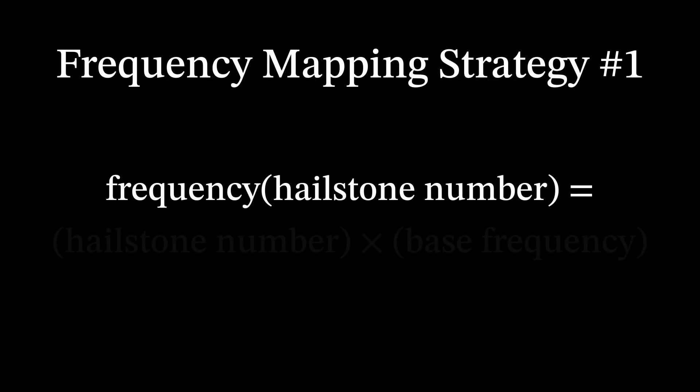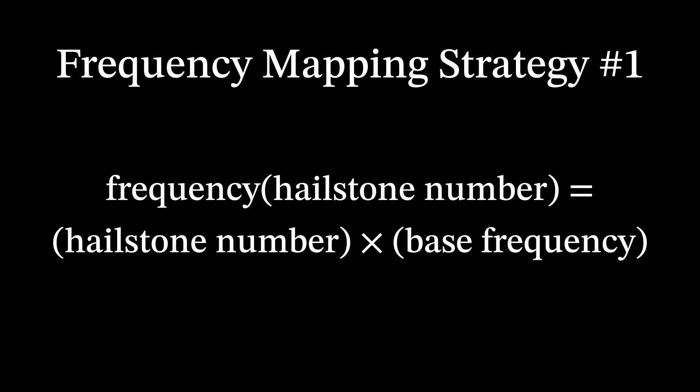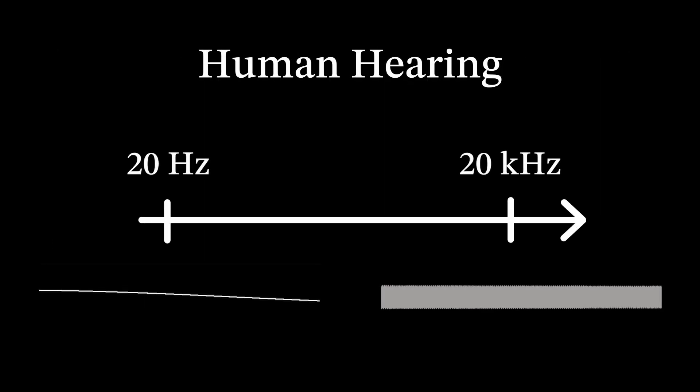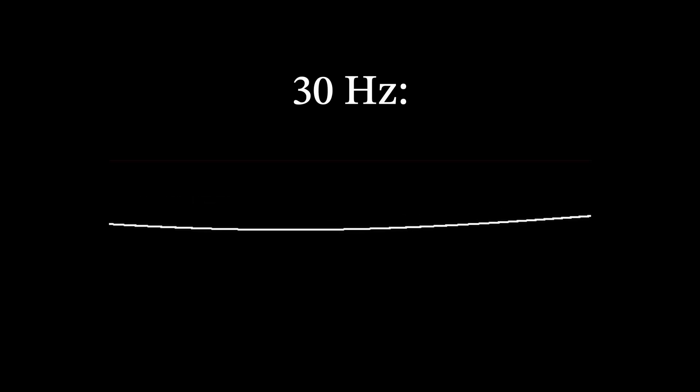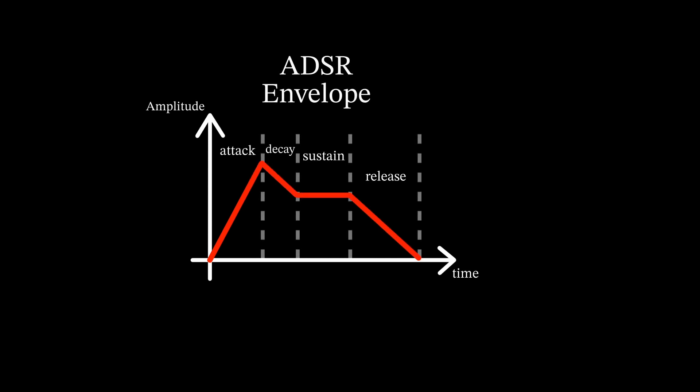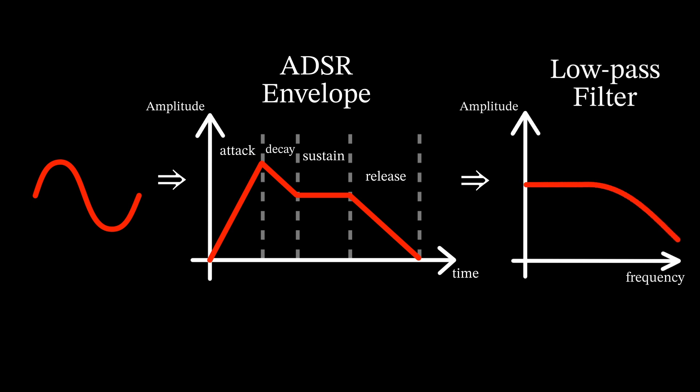The simplest way to map these sequences to frequencies is to multiply each hailstone number by some base frequency. The frequency range of human hearing is about 20 hertz to 20 kilohertz, but a 20 hertz sine wave is almost inaudible on most playback devices. So let's choose 30 hertz as our base frequency. I'm applying a subtle attack, decay, sustain, release envelope on the pure sine waves to give them a bit of character, as well as a gentle low-pass filter to smooth out the perceived loudness across the frequency range.